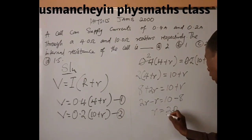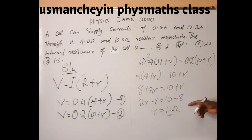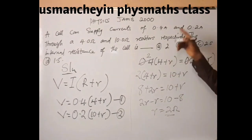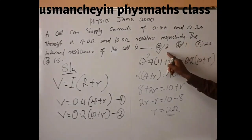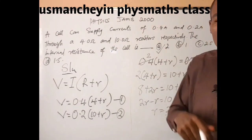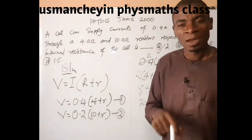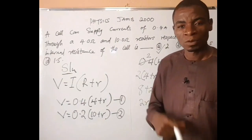It simply means that the internal resistance in this circuit is 2 ohms. If you check the options here, you'll find that option A is the correct option. Remember to click on the subscribe button and turn on the notification bell so that next time...